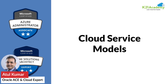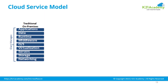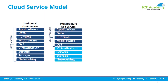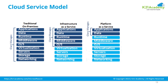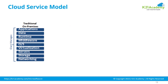Hey there, this is Atul from Team K21 Academy and in this lesson we are going to look at cloud service models. There are three service models in cloud: one is Infrastructure as a Service, we call IaaS; second is Platform as a Service, which we call PaaS; and then Software as a Service, which is SaaS. Let's first understand what is the difference between these three.